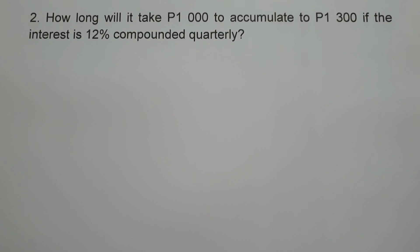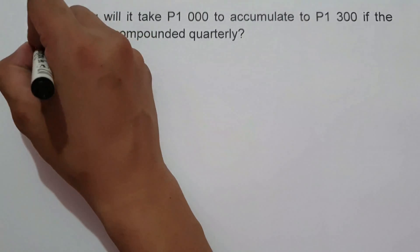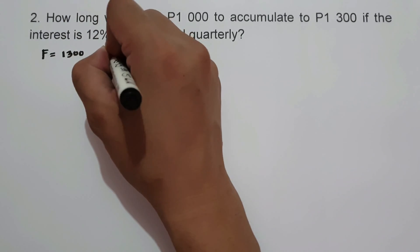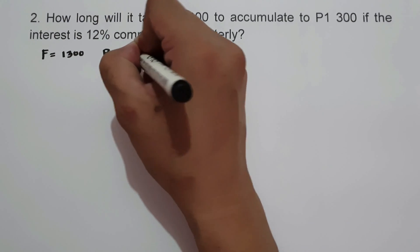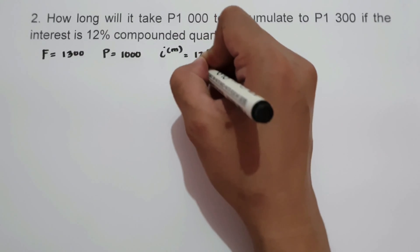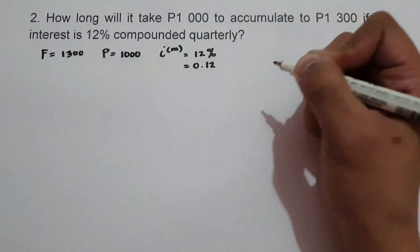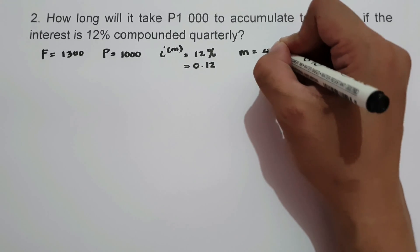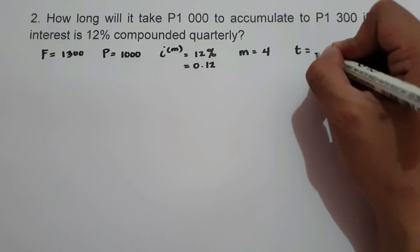On example number two: how long will it take $1,000 to accumulate to $1,300 if the interest is 12% compounded quarterly? Let us identify the given values. The future value F is 1,300. The principal P is 1,000. The nominal rate is 12% or 0.12. Since it is compounded quarterly, the frequency of conversion M is 4. We are looking for time T.